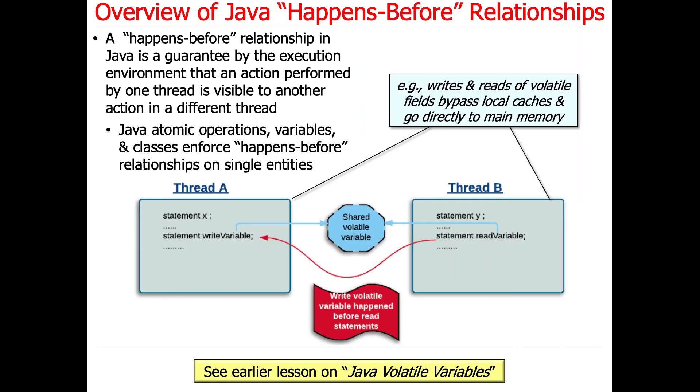Here's some examples with Java volatile variables that we talked about before. In that case, reads and writes of volatile fields will bypass local caches and go directly into main memory. So if someone in one thread writes to a volatile variable, it goes directly to shared memory, such that the next read that takes place in some other thread will get that updated variable atomically without sharding it, without getting pieces of it split and fragmented.